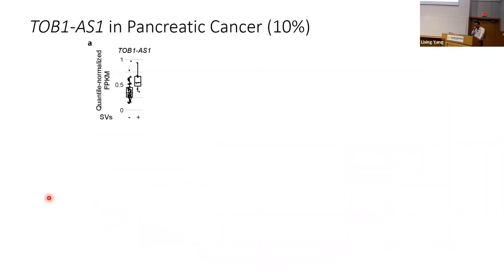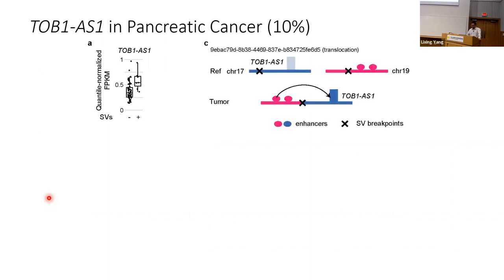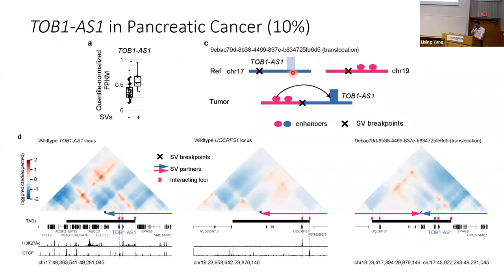Focusing on pancreatic cancer, we picked the gene TOP1-AS1, a lncRNA — not a protein-coding gene — altered by SVs in 10% of the pancreatic cohort. In one example patient, a chromosome 17 to chromosome 19 translocation potentially brings a chromosome 19 enhancer to interact with TOP1-AS1 on chromosome 17. We performed in silico Hi-C using the Akita algorithm to predict the 3D genome structure, showing that the translocation forms a new TAD. We are currently doing capture Hi-C to experimentally confirm the interaction.